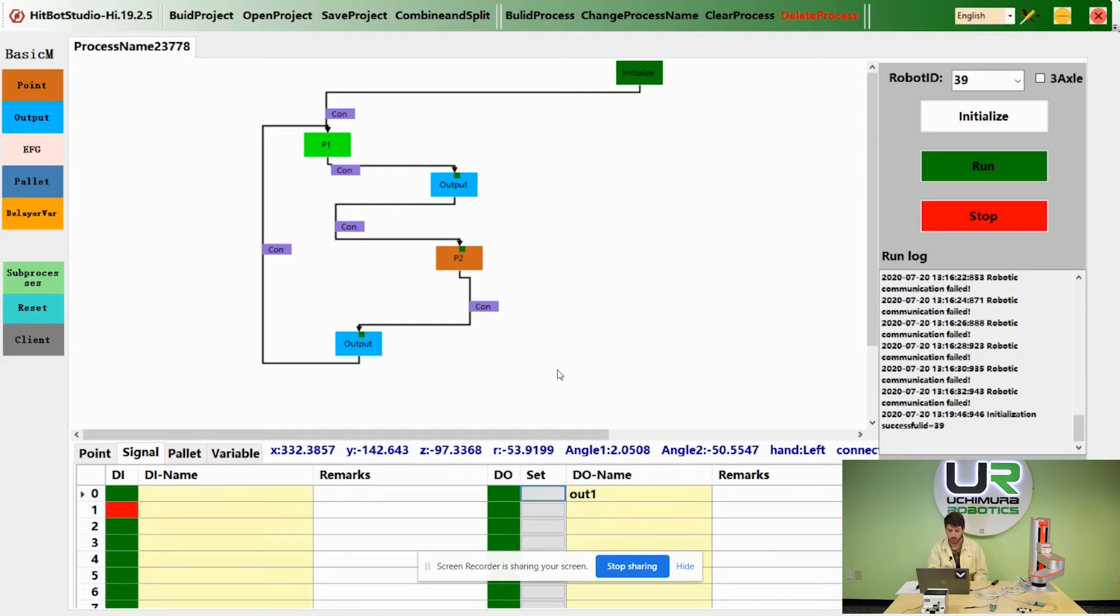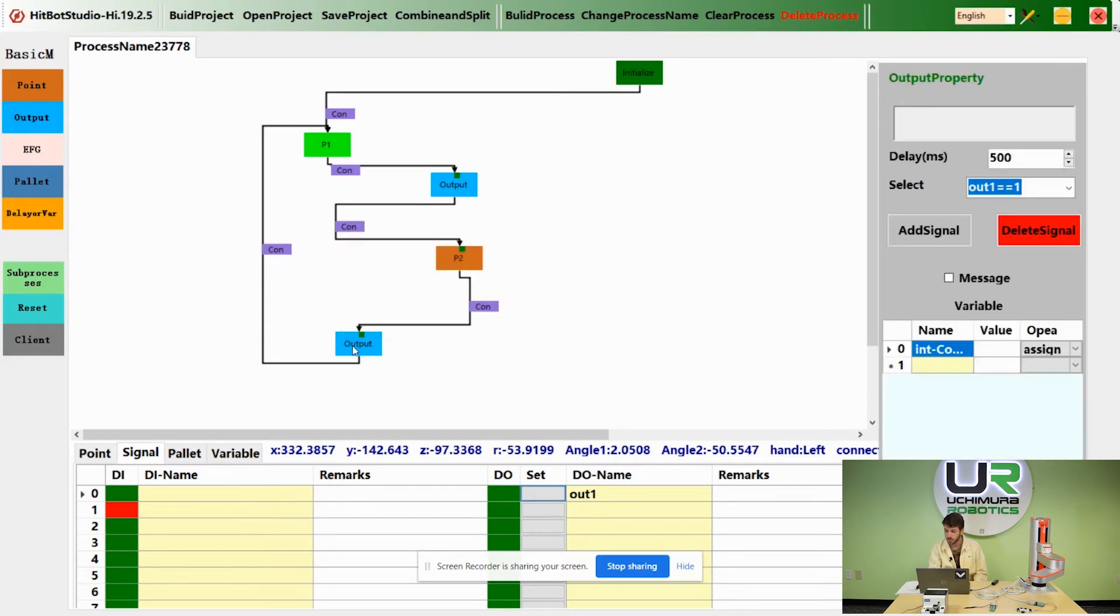What you would typically do is just right click on this output node, select out equals 1 to turn it on and add the signal. Then in a second output node, you would have that signal set to zero to turn it off.